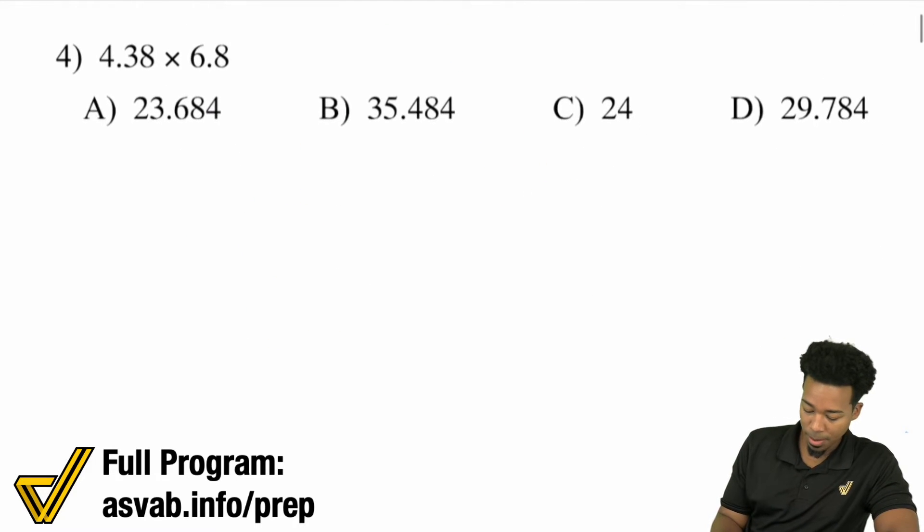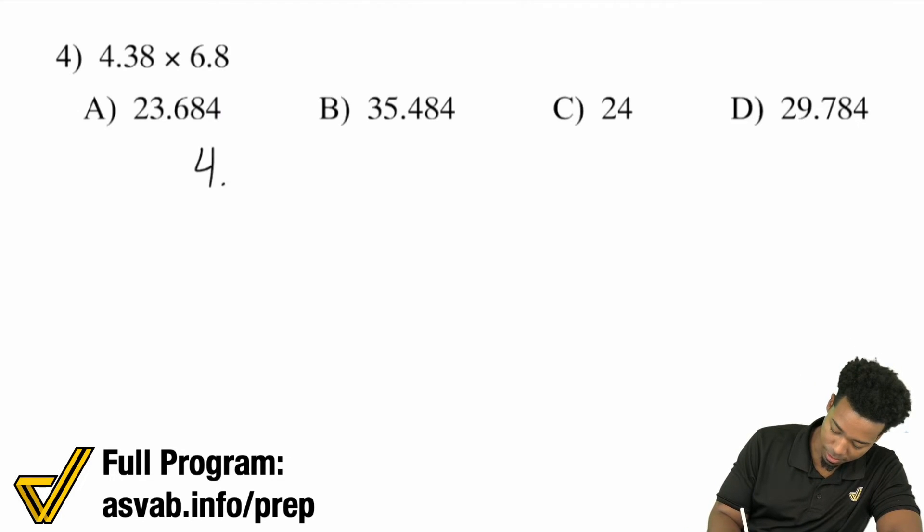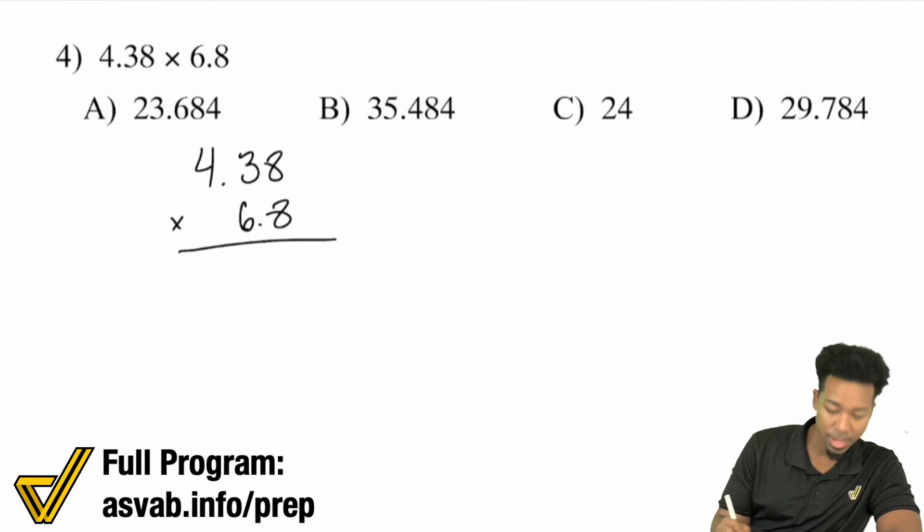Let's take a look at more examples. 4.38 times 6.8. Same deal here, 4.38 multiplied by 6.8. Again, multiply as if those decimals weren't there, but bring them back at the end. We have how many to bring back? One, two, three to bring back. So remember that you're bringing back three places. Get started, have fun.